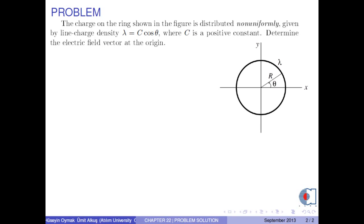The charge on the ring shown in the figure is distributed non-uniformly given by line charge density lambda as c times cosine theta where c is a positive constant. Determine the electric field vector at the origin.